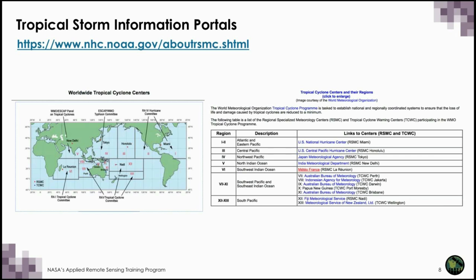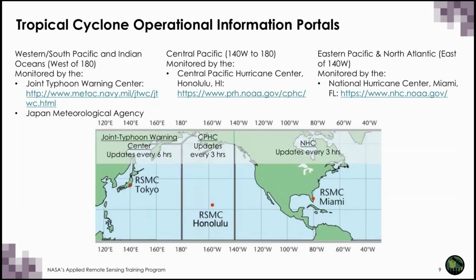This is all operational data. The Western, South Pacific, and Indian Oceans cover west of 180 degrees latitude and are monitored by the Japan Meteorological Agency, which updates storm tracking every six hours. The Central Pacific covers 140 to 180 degrees west and is monitored by the Central Pacific Hurricane Center, updating warnings every three hours.